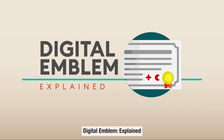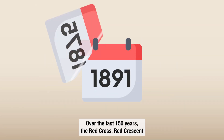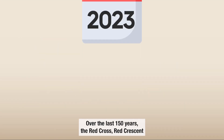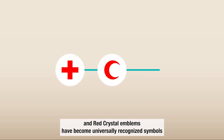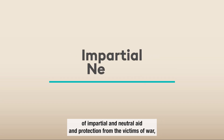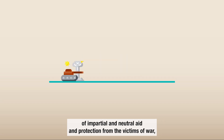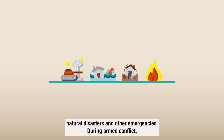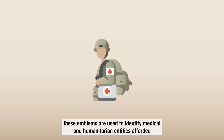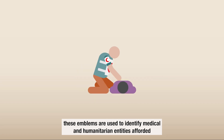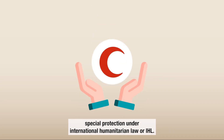Over the last 150 years, the Red Cross, Red Crescent, and Red Crystal emblems have become universally recognized symbols of impartial and neutral aid and protection for the victims of war, natural disasters, and other emergencies. During armed conflict, these emblems are used to identify medical and humanitarian entities afforded special protection under International Humanitarian Law, or IHL.